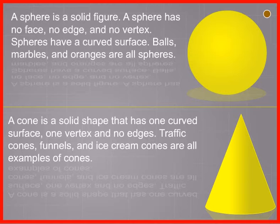A cone is a solid shape that has one curved surface, one vertex and no edges. Traffic cones, funnels and ice cream cones are all examples of cones.